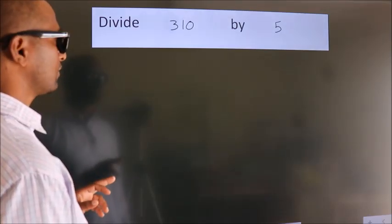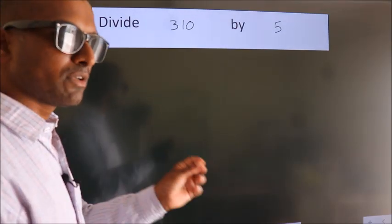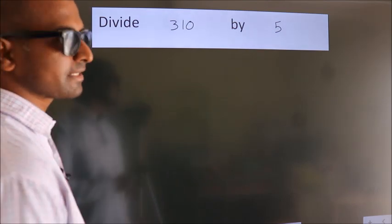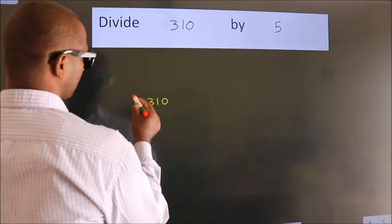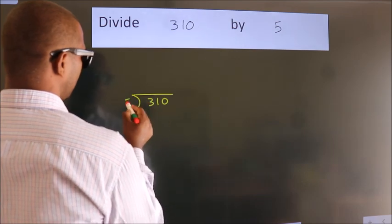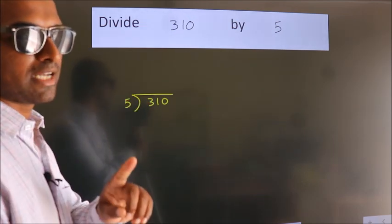Divide 310 by 5. To do this division, we should frame it in this way. 310 here, 5 here. This is your step 1.